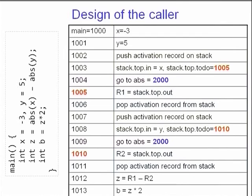Here's the call sequence. The statements leading up to the call are in yellow. The call itself is just a transfer of the program counter — shown in pink. After the callee returns to the caller, the cleanup code is shown in blue. In this code there are two calls to abs: once with minus 3 (x) and once with 5 (y). Stack.top.in is assigned two different values, and the to-do (return address) is set differently — 1005 for the first call and 1010 for the second.